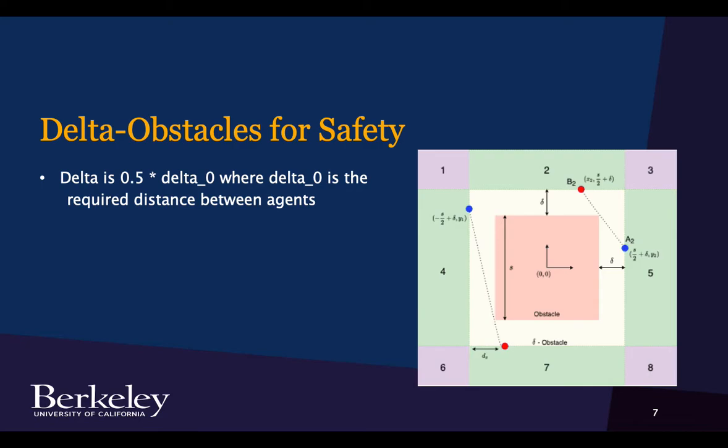Another thing we need in order to do this and assure safety is a delta obstacle. So the way we define a delta obstacle is by taking each obstacle, so this region here in red, and augmenting it with this creamish region.